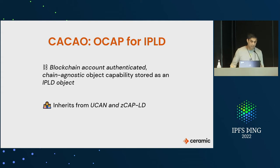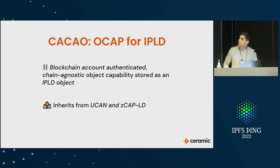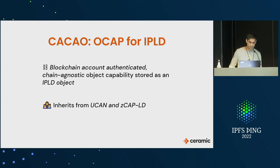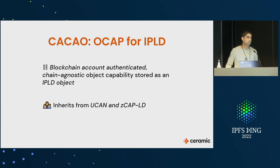CACAO is an acronym — Chain Agnostic Object Capability stored as an IPLD object — specifically designed to be authenticated using blockchain accounts. It inherits from the great work of UCAN and ZCAP-LD. Chain agnosticism means that various blockchains should work. We have it working with Ethereum right now, and a prototype for Solana is in progress.